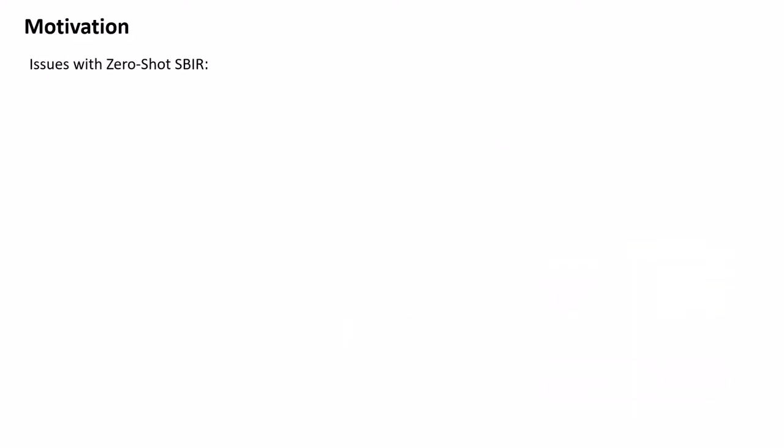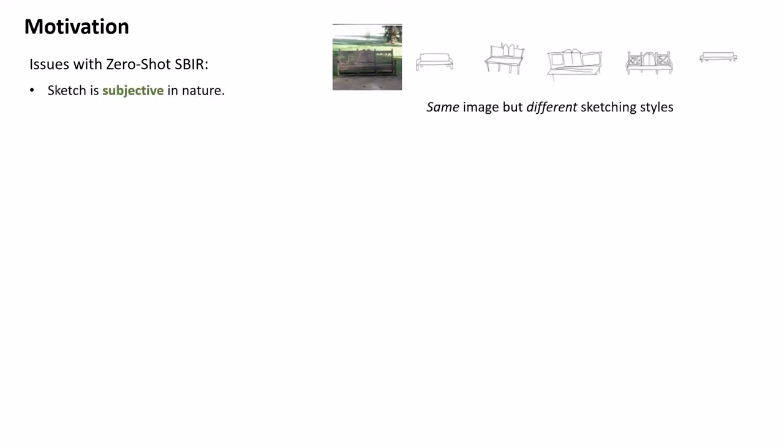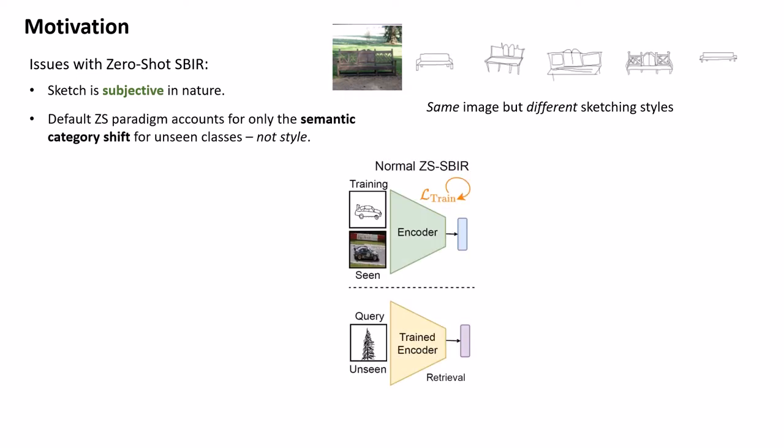Zero-shot SBIR is trickier compared to a conventional zero-shot problem. The non-triviality here arises due to diversity in sketching styles. By default, zero-shot setting assumes that we only need to generalize to new classes, that is, adapt only to the different photo distribution. But for sketches, it needs to adapt to these sketching styles, in addition to the new semantic knowledge.